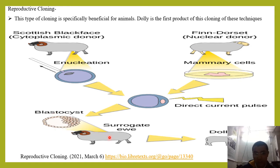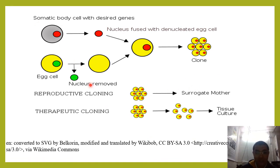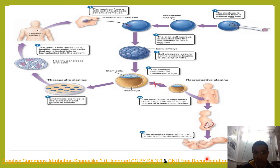This blastocyst is implanted into the uterus of another ewe, which acts as a surrogate. Ultimately it produces Dolly — the first example of reproductive cloning. In the case of therapeutic cloning, the cloned cells are cultured in tissue culture medium, whereas in reproductive cloning the blastocyst is transplanted into the surrogate mother.